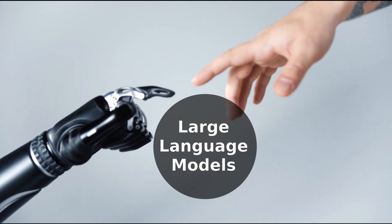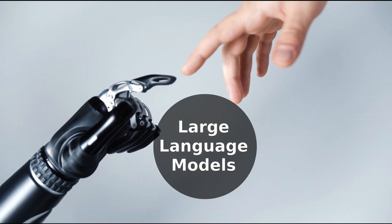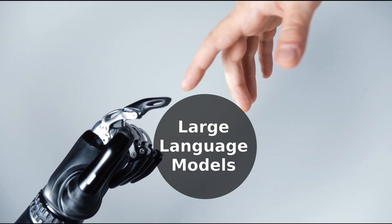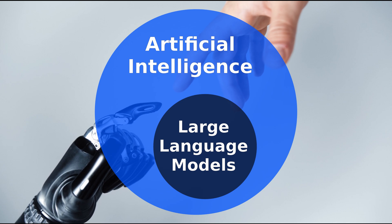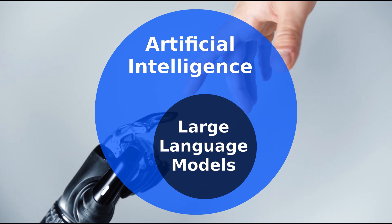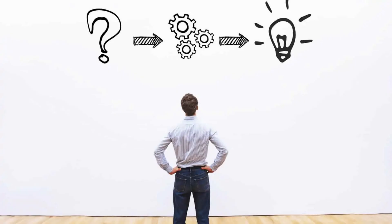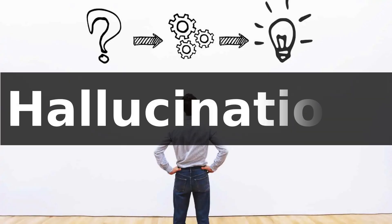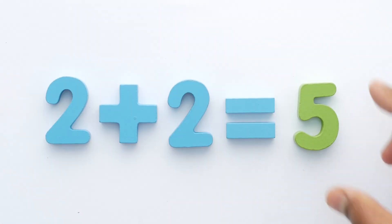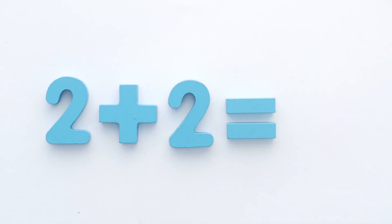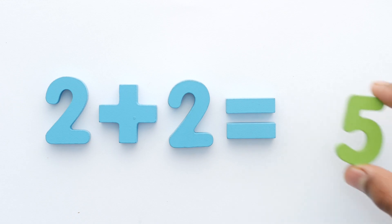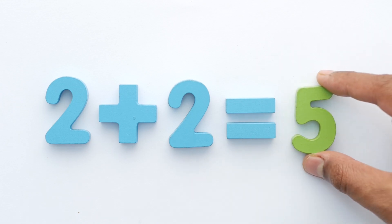Large language models are one of the most revolutionary breakthroughs of the 21st century in the field of artificial intelligence. But there is one big problem: they tend to hallucinate, meaning that they often generate responses that are factually incorrect or nonsensical.